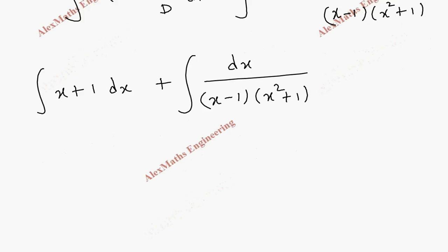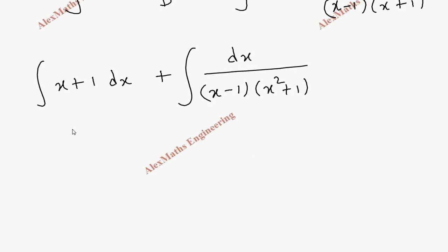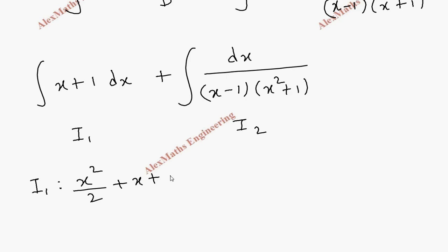Let's take these as I1 and I2. I1 integrates directly to give x squared over 2 plus x plus constant. For I2 we are going to apply the partial fraction, and we have the factors x minus 1 times x squared plus 1.